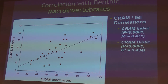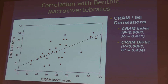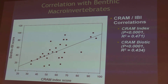As a quick teaser, here is some calibration data showing CRAM index scores on the x-axis and benthic IBI scores on the y-axis. There is a significant positive relationship between the two — as CRAM scores go up, benthic IBI scores also go up.